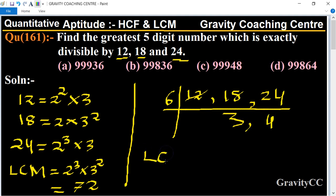Therefore, LCM equals 6 × 3 × 4, which equals 72.